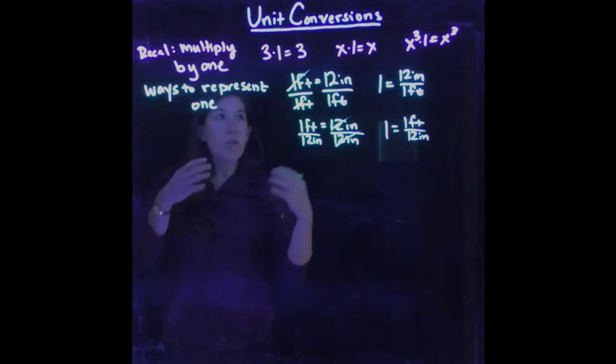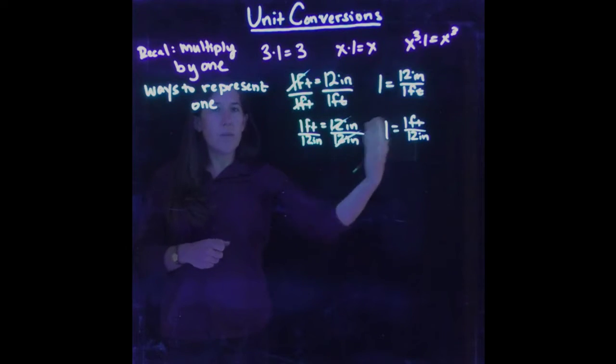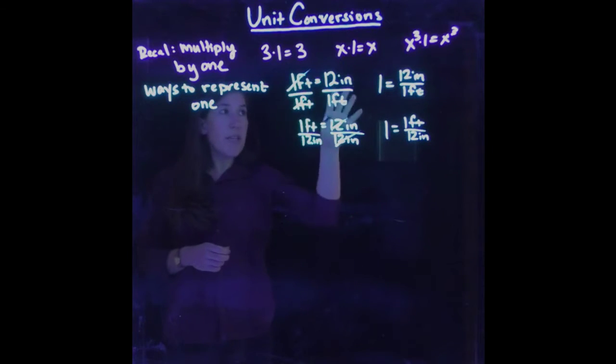So whenever you have two quantities that are equal to each other, their ratio simply gives you the number 1. And so whenever you're doing unit conversions, you're really just using this basic fact.